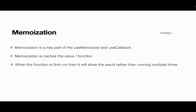Memoization caches the value or the function. When the function is first run it stores the result rather than running it multiple times. Similarly with useCallback, when the function runs it stores the entire function and processes it. This is a basic recap of memoization — do visit the link in the description for more details.